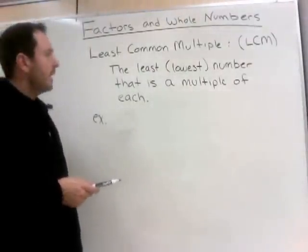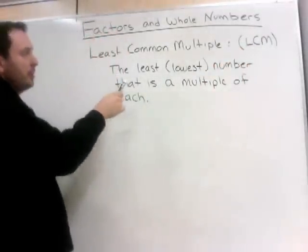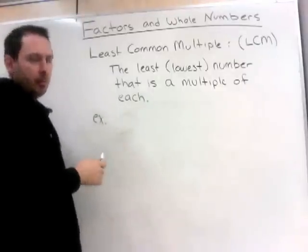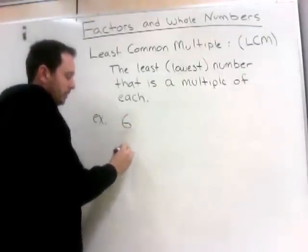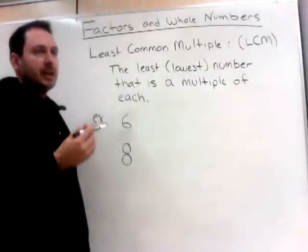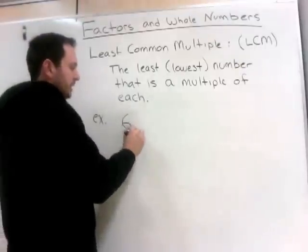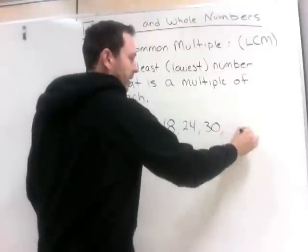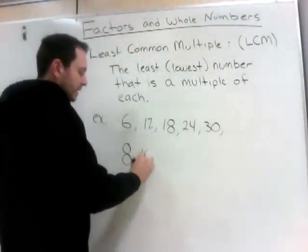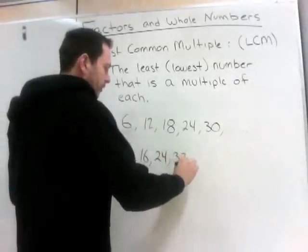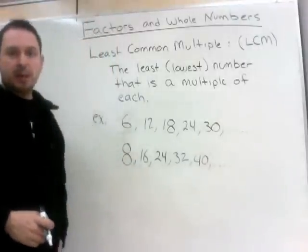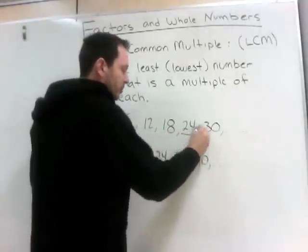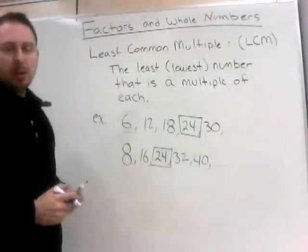The last part of the lesson today is least common multiple, shortened to LCM — the lowest number that is a multiple of each. Another way of seeing this is a number that is divisible by both of the numbers we're using. Let's find the LCM of 6 and 8. Multiples get bigger: multiples of 6 are 6, 12, 18, 24, 30, and these keep going. Multiples of 8 are 8, 16, 24, 32, 40, and these keep going. The smallest or least common multiple is 24.